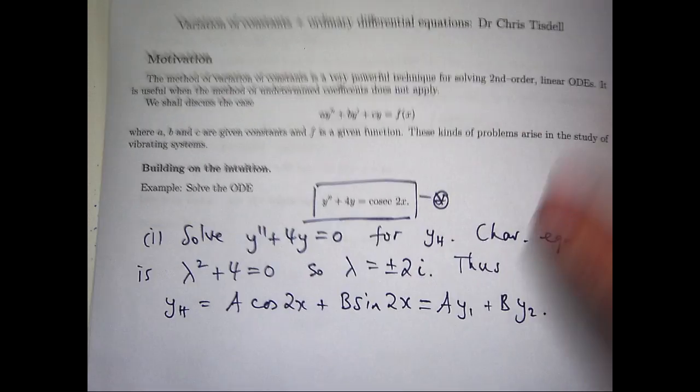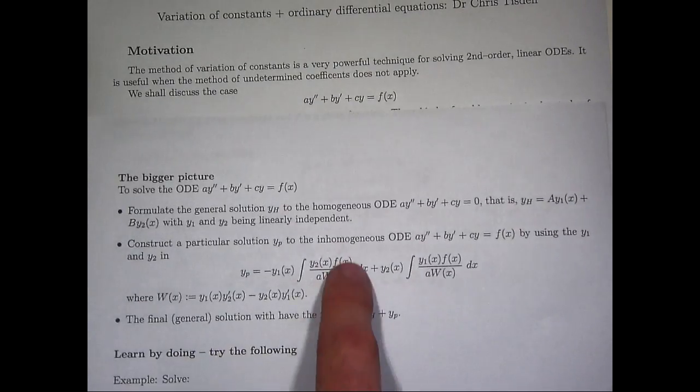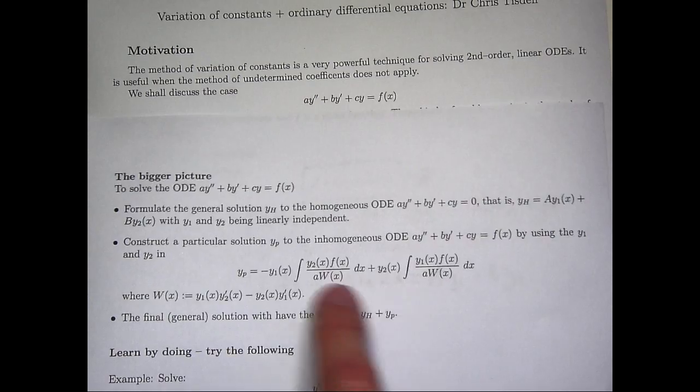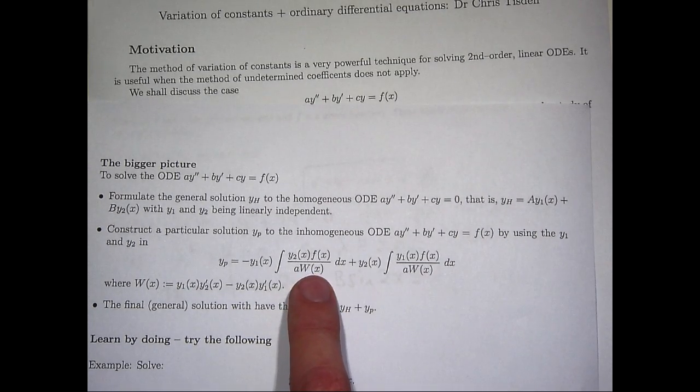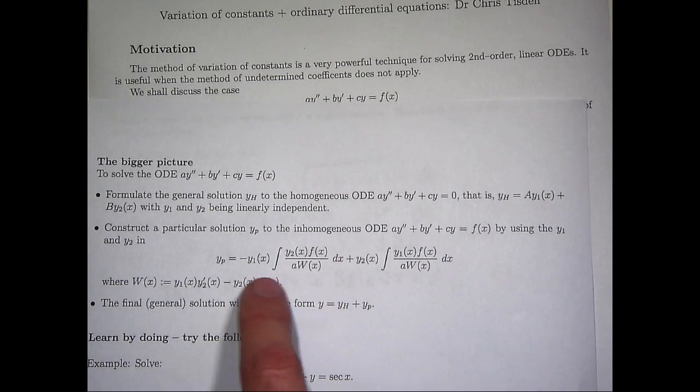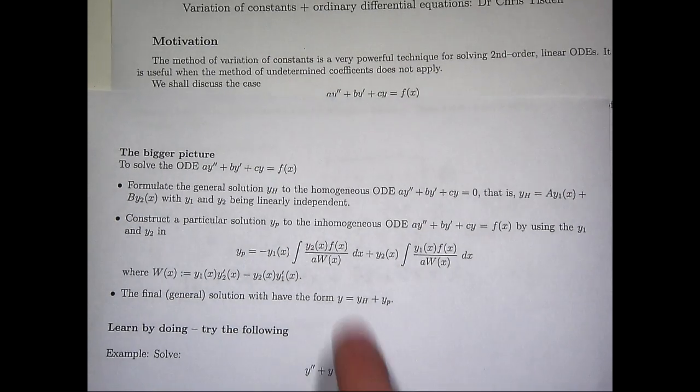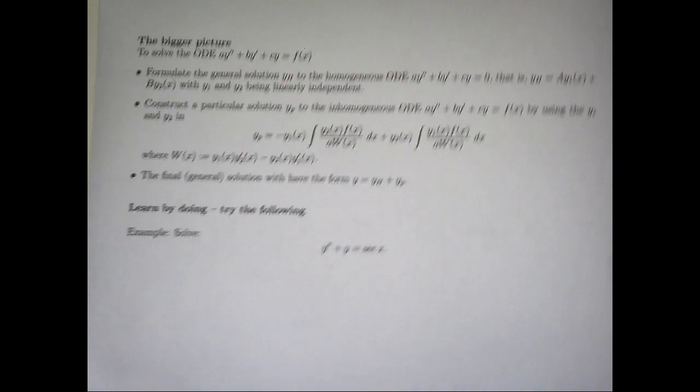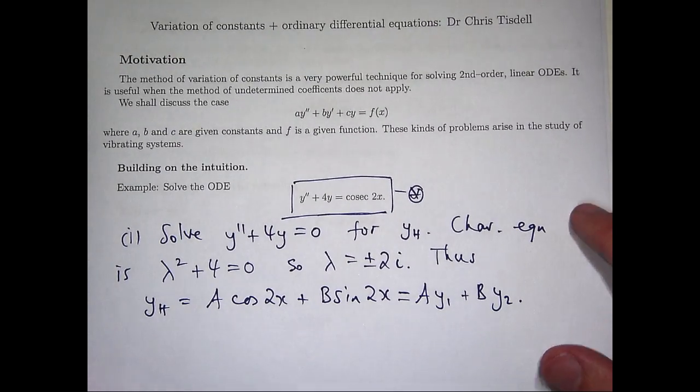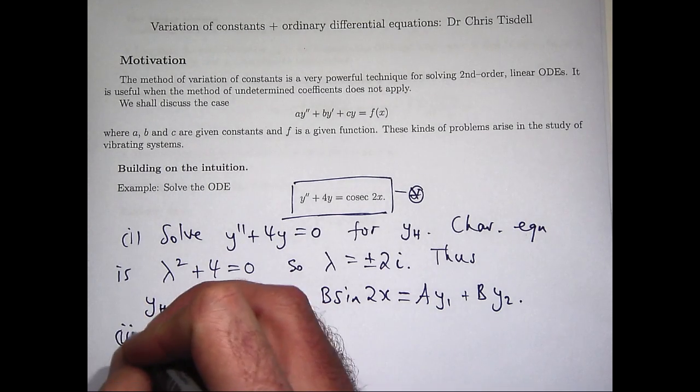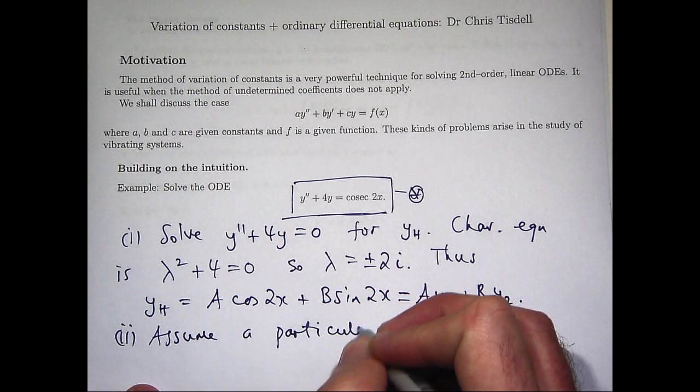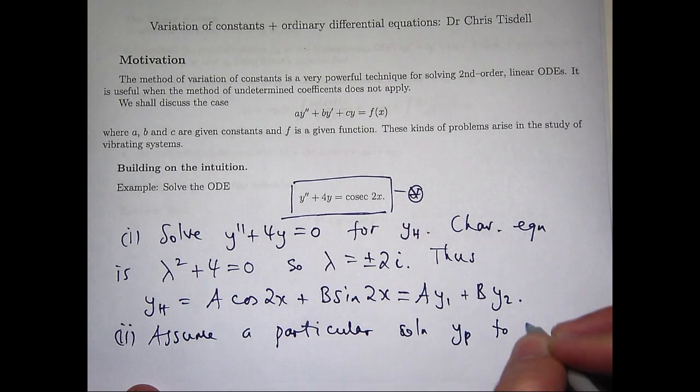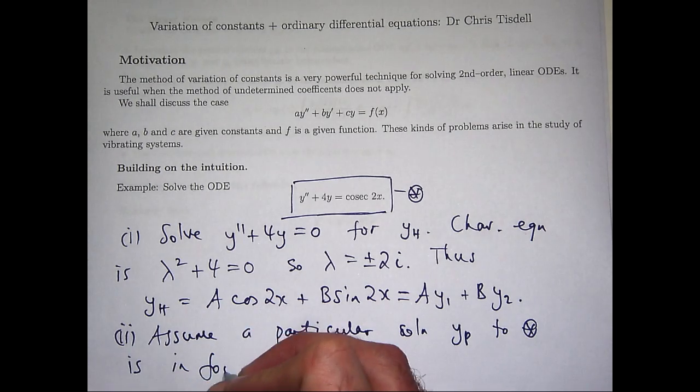We're going to use this representation here. It looks like a lot, but essentially it's just two integrations. The W here is a special function known as the Wronskian, which is just down here. And you can think of this part, or the minus of this part, as just one function of x and this integral's another function of x. So the method of variation of constants or variation of parameters makes the following assumption.